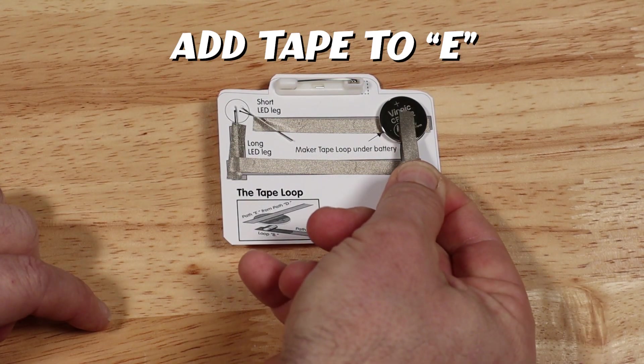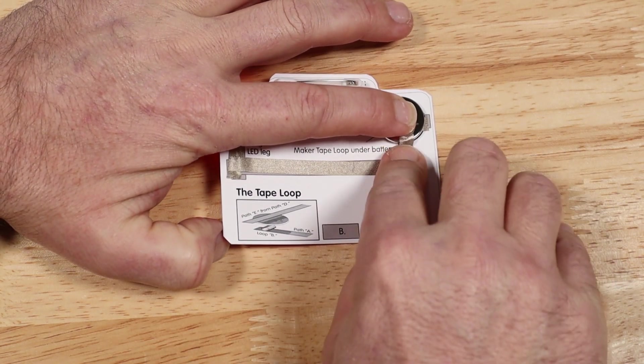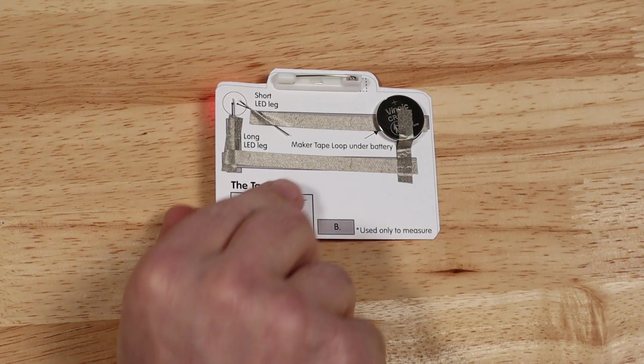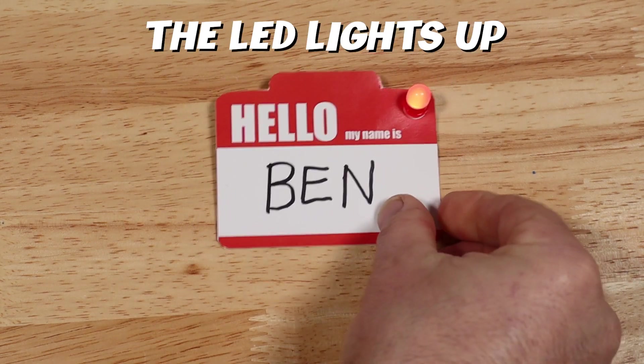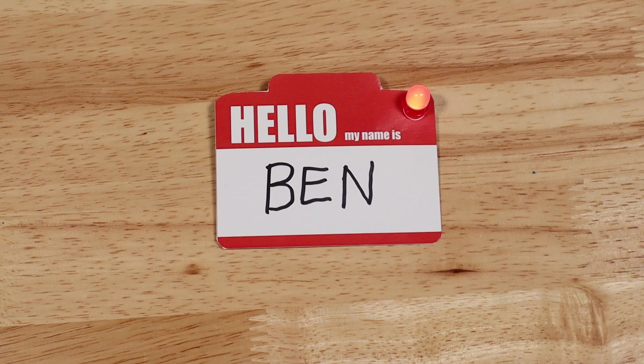Lastly, cut a piece of tape and apply it to E all the way up and over the top positive side of the battery. The LED will light up. Congratulations, you just made your own LED light up name tag.